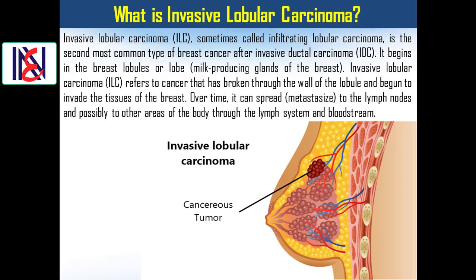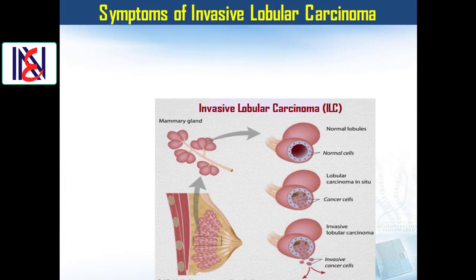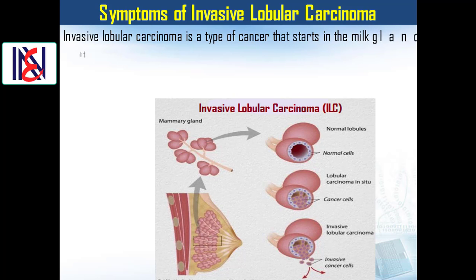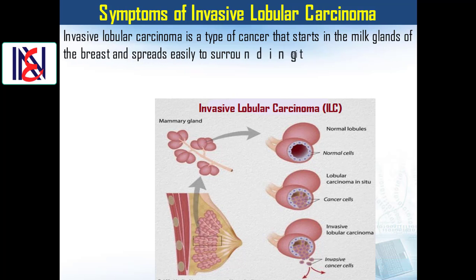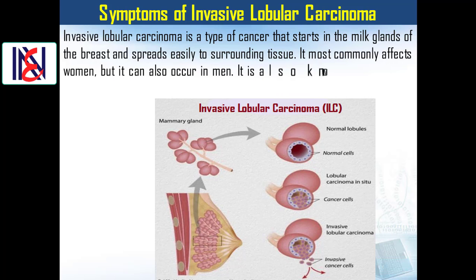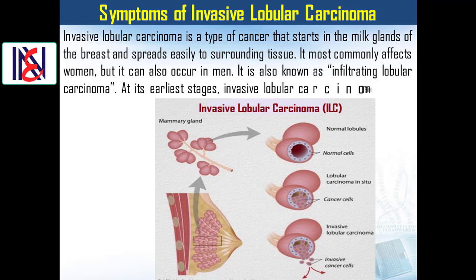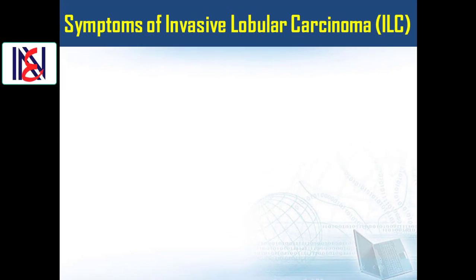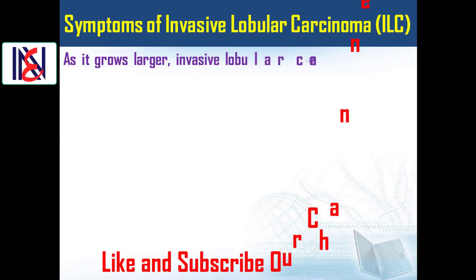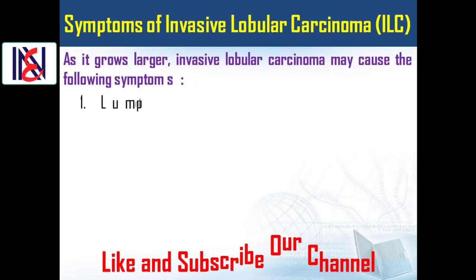Over time, invasive lobular carcinoma can spread — or metastasize — to the lymph nodes and possibly to other areas of the body through the lymph system and bloodstream. ILC is a type of cancer that starts in the milk glands of the breast and spreads easily to surrounding tissue. It most commonly affects women but can also occur in men. It is also known as infiltrating lobular carcinoma. At its earliest stages, ILC may cause no signs or symptoms.